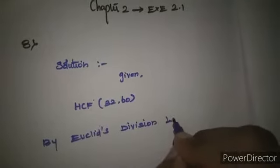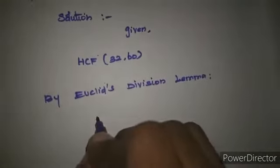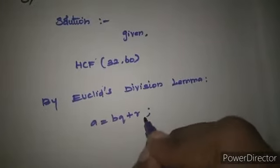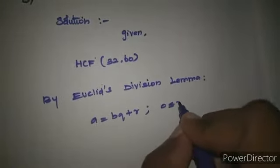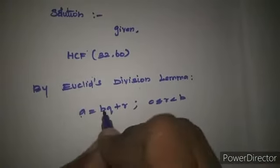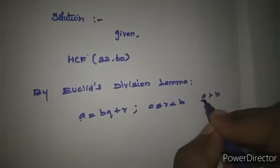What is the form of Euclid's division lemma? A equals BQ plus R, where the remainder limit is 0 less than or equal to R less than B. We know that A is greater than B, where A is the largest value and B is the smallest value.